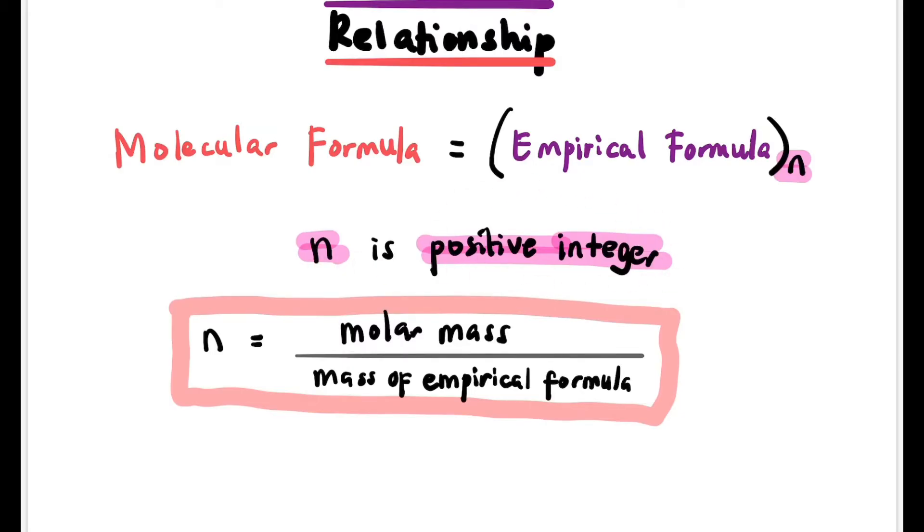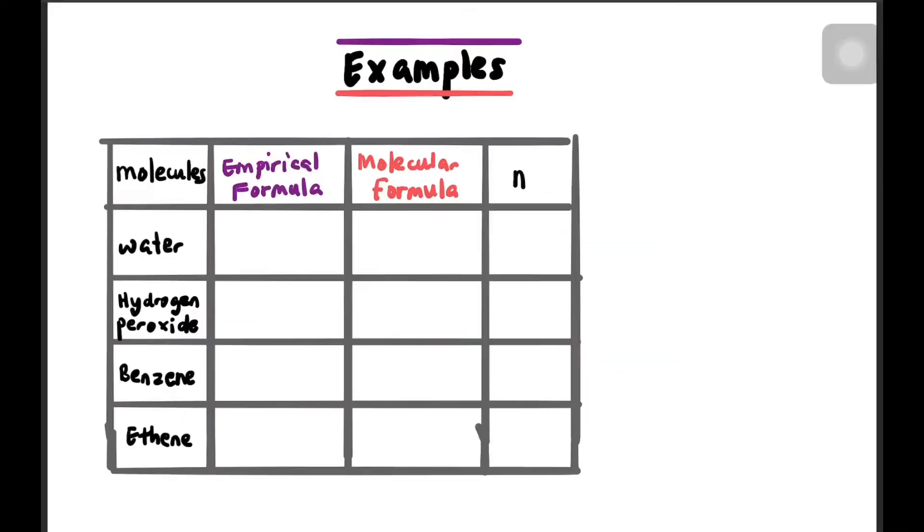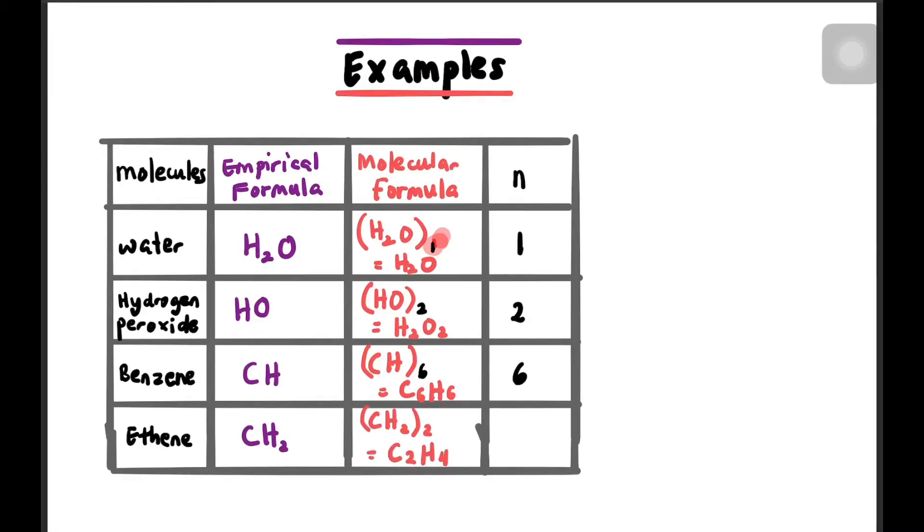Now let's look at some examples of the relation. For water, H2O, the empirical formula is H2O and the molecular formula is also H2O, so the value of n is one. For hydrogen peroxide H2O2, the empirical formula is HO, so n equals two. For benzene, CH is the empirical formula and C6H6 is the molecular formula. For ethene, the empirical formula is CH2, and C2H4 is the molecular formula where n equals two.